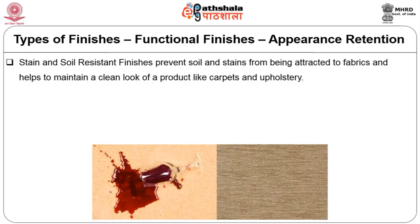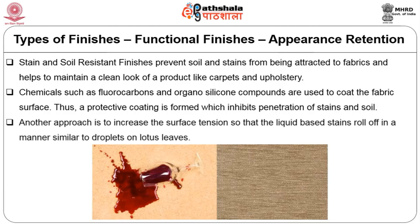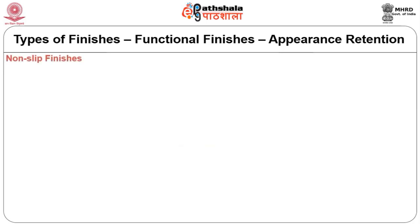Stain and soil resistant finishes prevent soil and stains from being attracted to fabrics, helping maintain a clean look for products like carpets and upholstery. Chemicals such as fluorocarbons and organosilicon compounds are used to coat the fabric surface, forming a protective coating that inhibits penetration of stains. Another approach is to increase surface tension so that liquid-based stains roll off, similar to water droplets on lotus leaves.